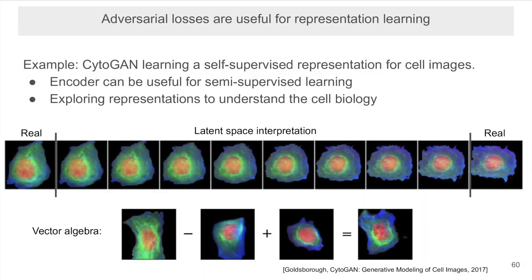However, there are many great uses for GANs in medical imaging, such as for representation learning using models like BiGAN, ALI, InfoGAN, DeepInfomax, or GibbsNet. A good example is Cytogan, which applied these methods to represent cell morphology. These methods can be used to incorporate unlabeled data for semi-supervised prediction tasks, as well as for exploring what variations are present to understand the biology.